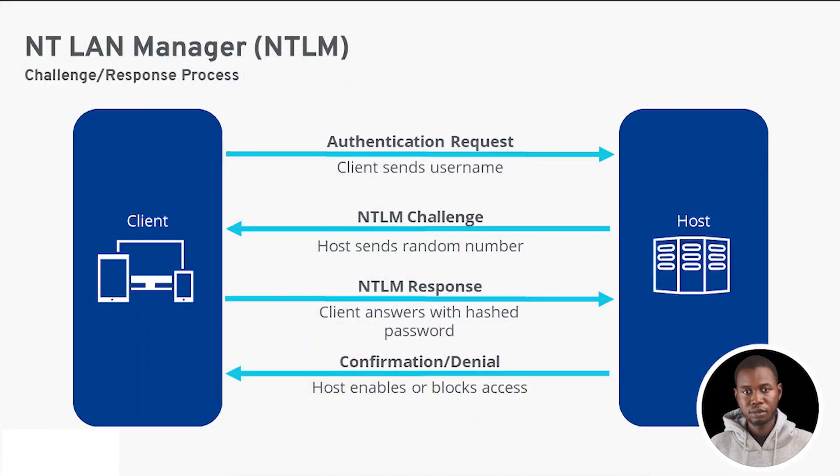When Charles next attempts to authenticate — such as logging into the Windows system or accessing a network resource — an authentication request is sent to the server. The server responds by sending a random value called a challenge to the client. The client receives the challenge and uses it to encrypt the user's hashed password using the NTLM algorithm. The client sends the encrypted response back to the server. The server retrieves the stored hashed password associated with Charles's account and compares it with the received encrypted response. If the two values match, the authentication is successful and access is granted.